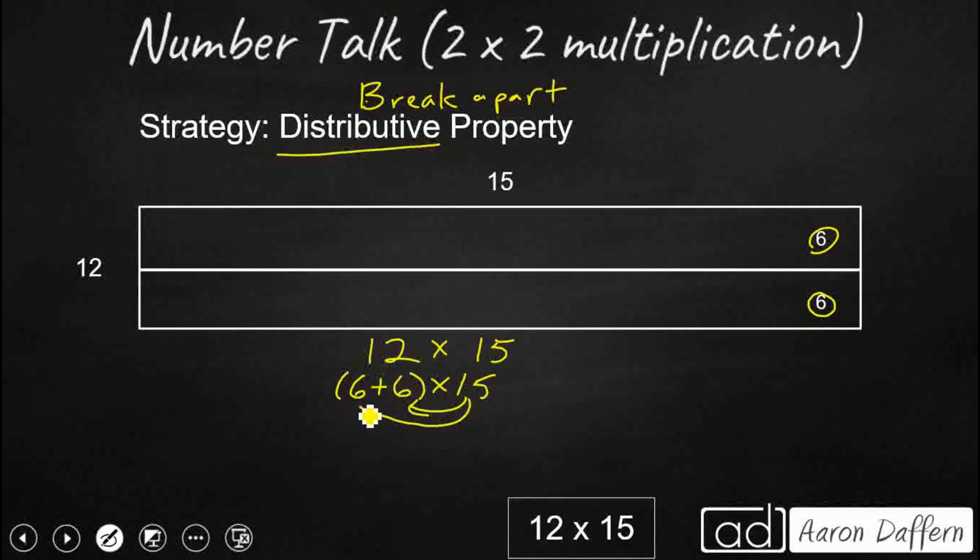We're going to take that 15. We're still going to multiply it by both of those addends, but we're going to make partial products now. So instead of 12 times 15, it's going to be 6 times 15. Then we're going to add that to our 6 times 15. So 6 times 15 is a little bit easier. That's going to be 90 and 90. So hopefully you got your answer of 180. So we just added 90 and 90 and we got 180.